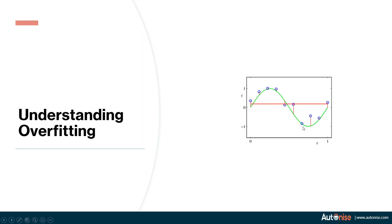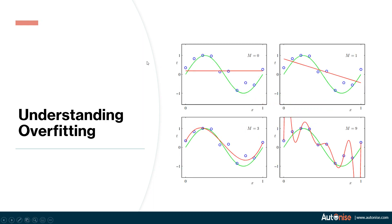Now forget about the green graph. Let's assume you only have the blue data points — this is your machine learning task. Given only the blue data points, you have to find out the green function. You can only observe the blue data points and you want to find a function very close to the ideal distribution. I have drawn some of the curves which are possible with an m-degree polynomial.